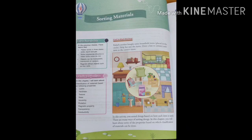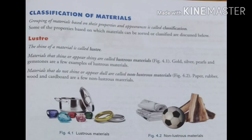Hello, dear students. In this video we are going to start a new lesson: Sorting Materials. In this chapter we are going to study classification of different materials based on their physical properties — like lustre, hardness, texture, state, solubility, etc. Classification of materials means grouping of materials based on their properties and appearances.